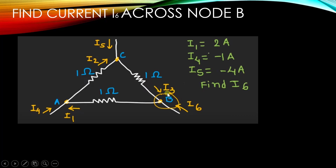At node B, we have three currents: I6, I3, and I1. I3 and I6 are incoming currents and I1 is the outgoing current. Some resistance values are given. The question is to find the value of current I6. The value of current I1 is given as 2A, I4 is equal to minus 1A, and I5 is equal to minus 4A.